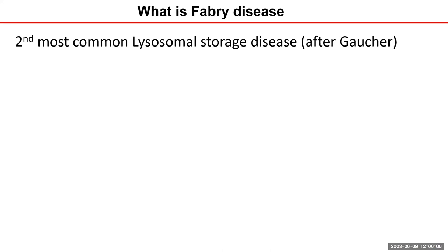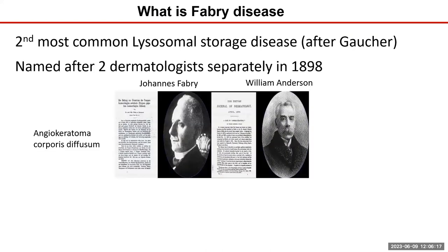What is Fabry disease? As most of you know, Fabry disease is a lysosomal storage disease, and it's the second most common one after Gaucher. It's been described ever since 1898, surprisingly by two dermatologists at the same time — one in Germany by the name of Johann Fabry, and the other a British doctor by the name of William Anderson. Separately in London, they both described the disease at the same time, and that's why it's sometimes also called Fabry-Anderson disease.